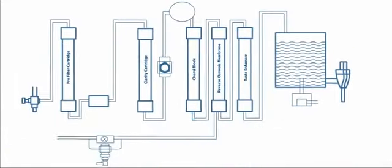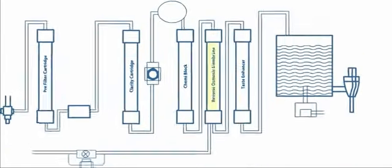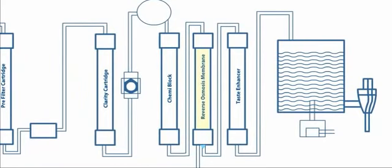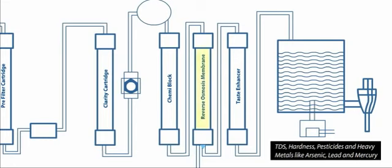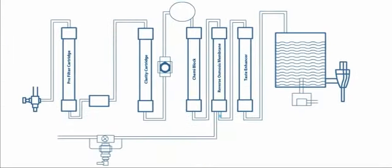Water then goes to the reverse osmosis membrane cartridge. This cartridge reduces total dissolved solids, hardness, pesticides and heavy metals like arsenic, lead and mercury. It also removes microorganisms like bacteria, virus, protozoa and cysts.